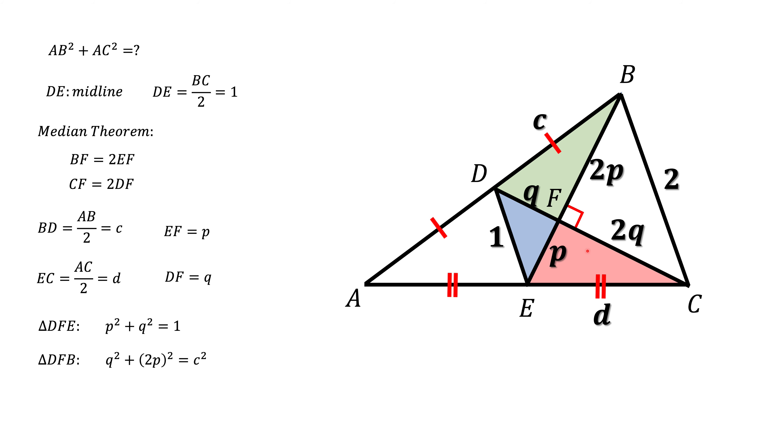Now let's look at the red triangle and apply Pythagorean theorem there, so we get P squared plus 2Q squared equals D squared.